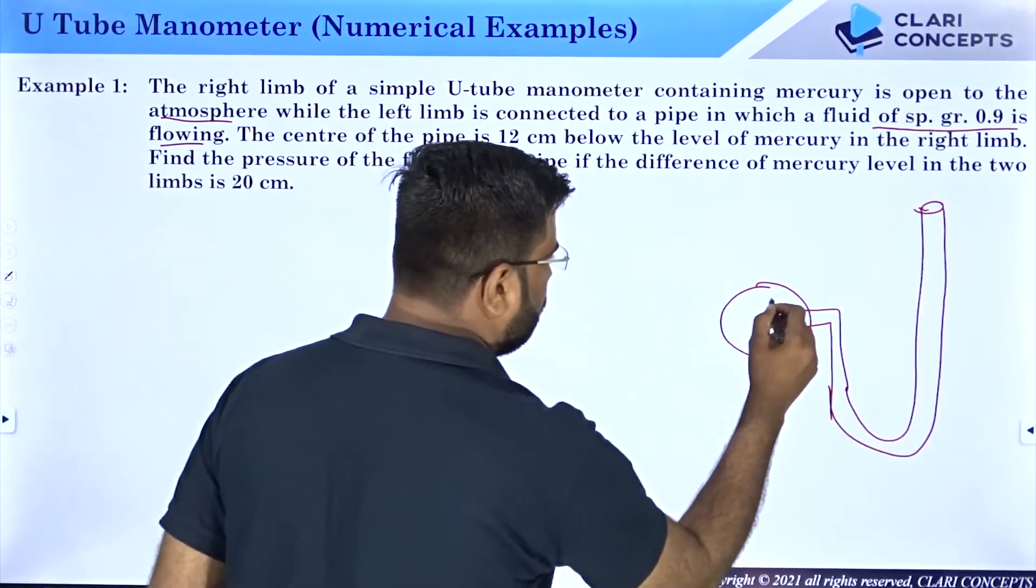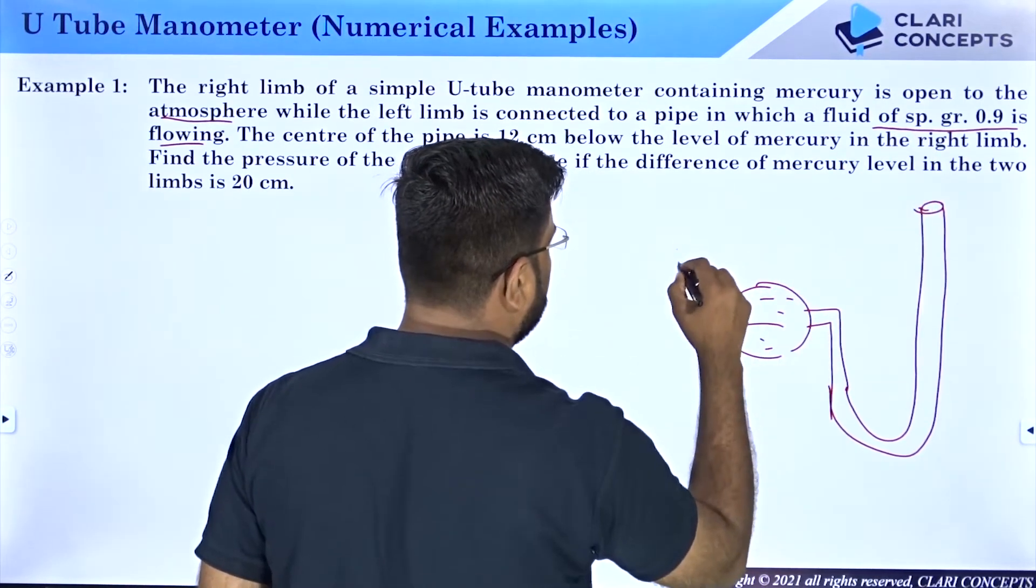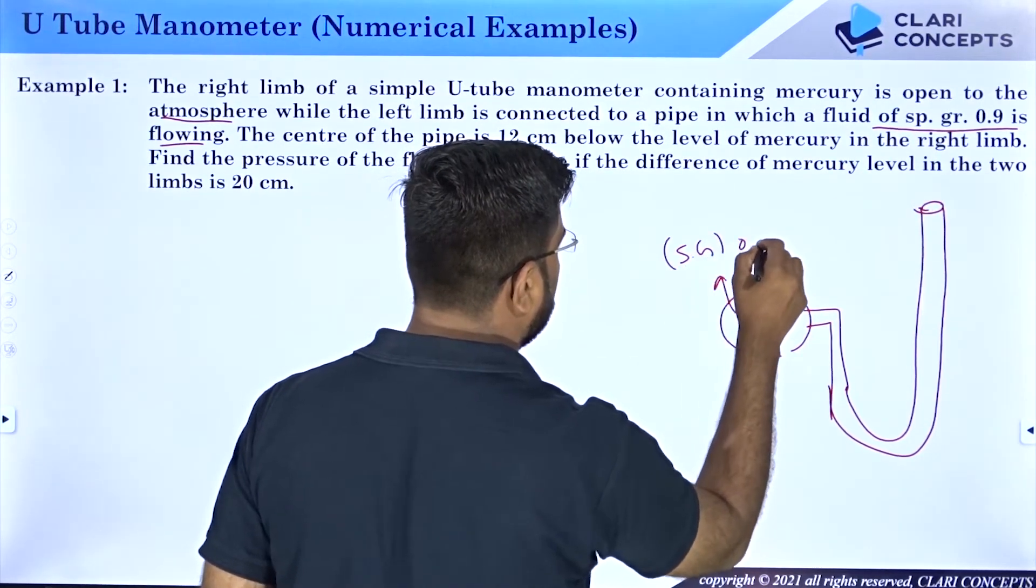Let us say the fluid flowing through this main pipe has density. Specific gravity is given to you as 0.9.